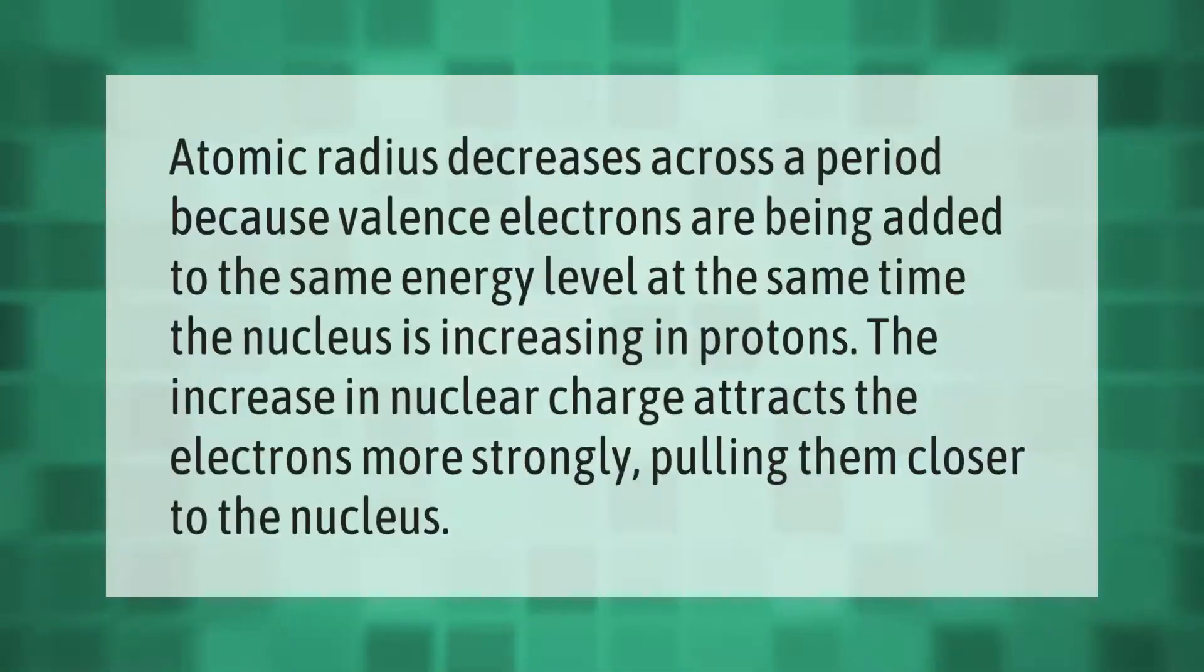Atomic radius decreases across the period because valence electrons are being added to the same energy level. At the same time, the nucleus is increasing in protons. The increase in nuclear charge attracts the electrons more strongly, pulling them closer to the nucleus.